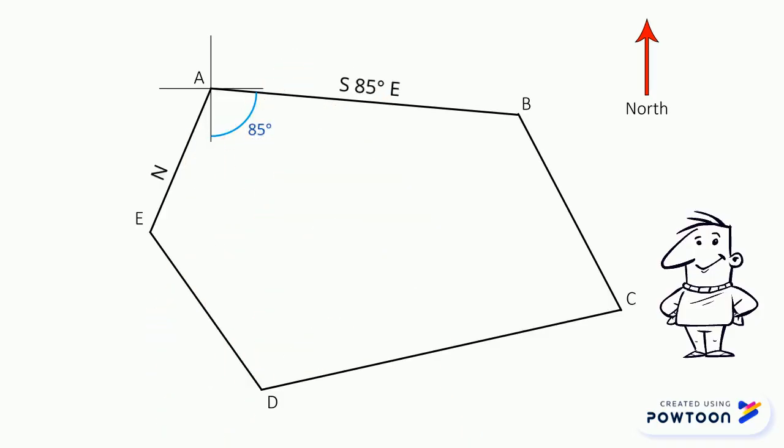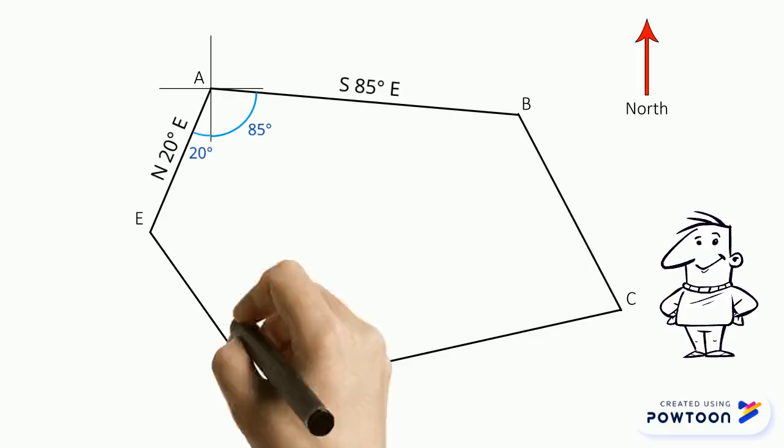Therefore this part of point A is also 20 degrees. Now we can simply add 85 degrees and 20 degrees. Our interior angle for point A is 105 degrees.